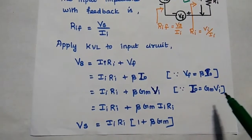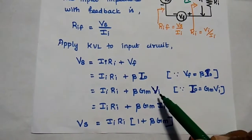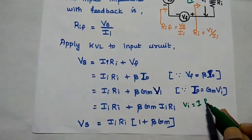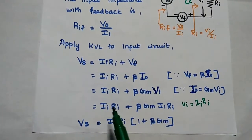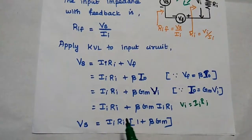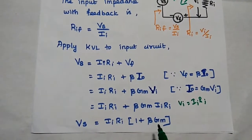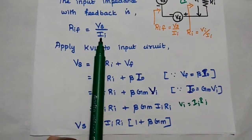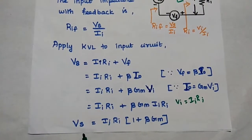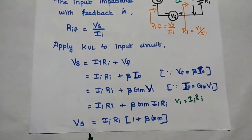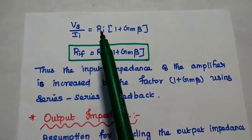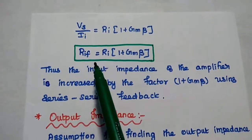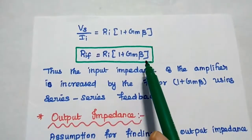IO can be replaced with the value Gm Vi. According to Ohm's law, Vi equals I into R. So we can take Ii Ri as a common term: we get Ii Ri into 1 plus beta Gm equals Vs. So what is RiF? It is Vs by Ii. We move Ii to the other side and get the input impedance with feedback: Vs by Ii is equal to Ri into 1 plus Gm beta. This is nothing but input impedance with feedback.